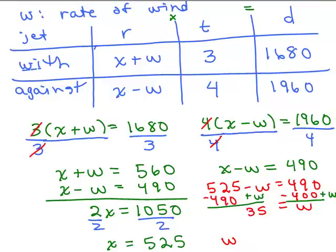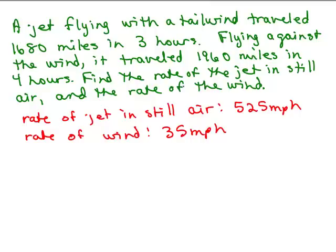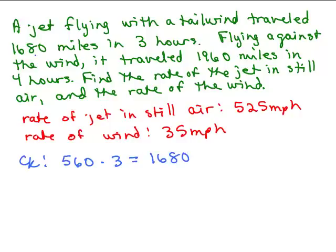That seems reasonable, but we've got to check our answers and go back to the original words to see if these make sense. We found X equals 525 miles per hour for the rate of the jet in still air, and W equals 35 miles per hour for the rate of the wind. For the tailwind case: 525 plus 35 equals 560 miles per hour, and 560 times 3 equals 1,680 — which matches. So that checks out.